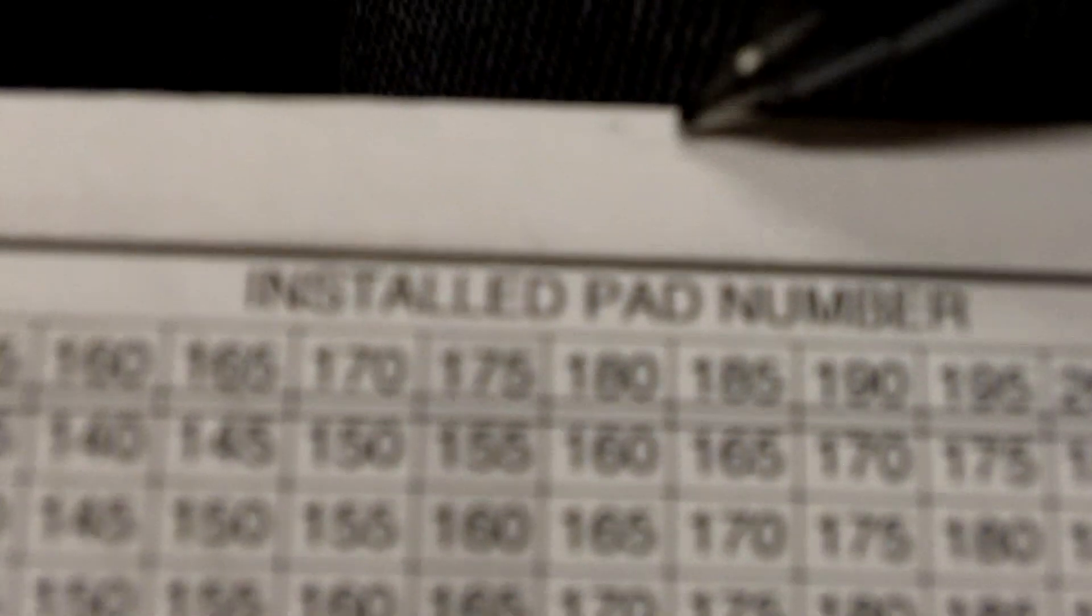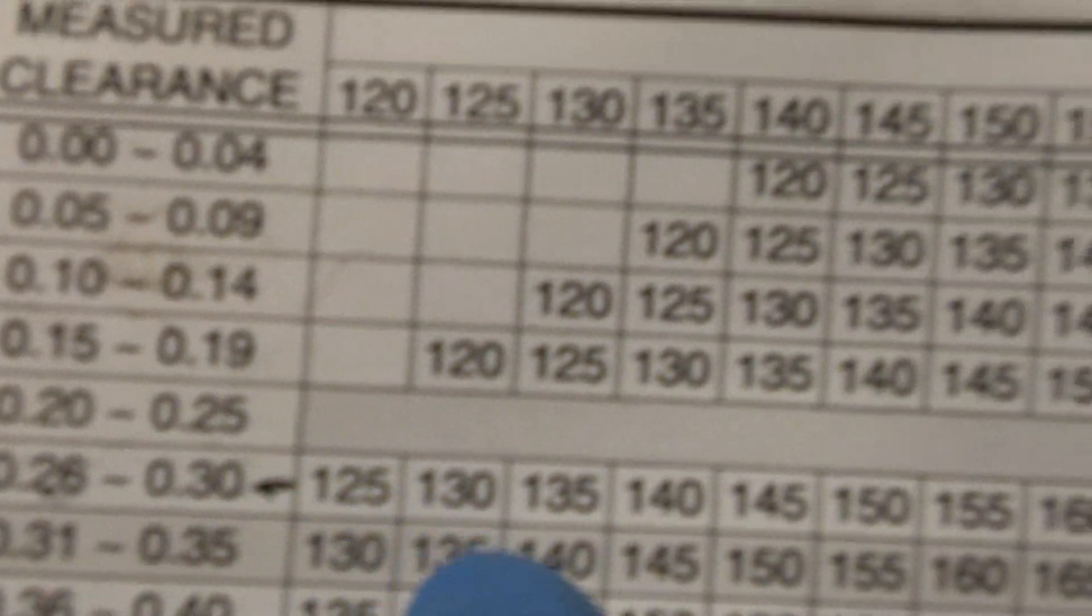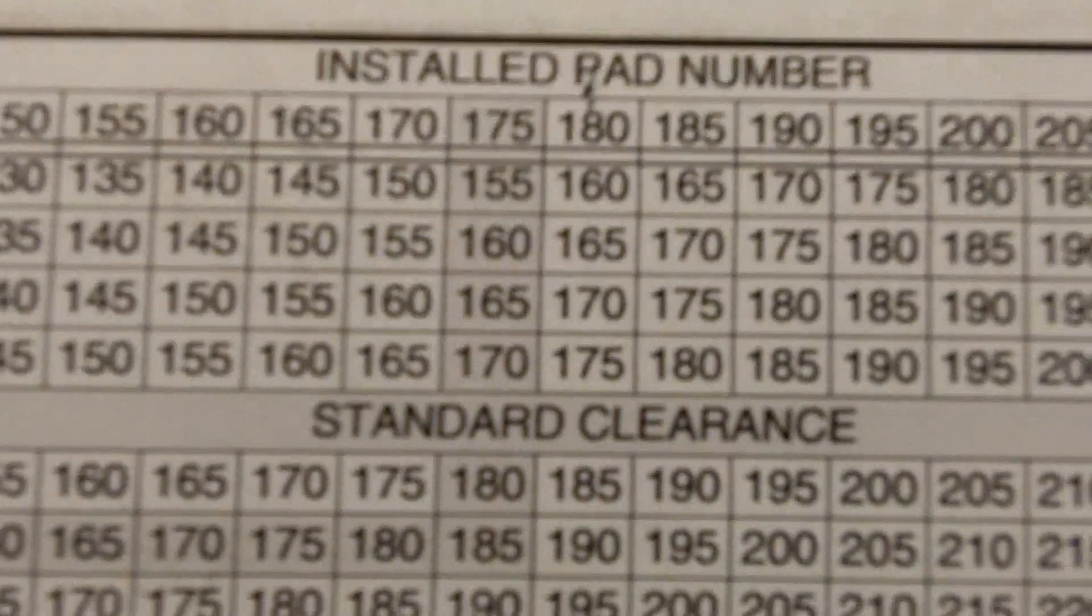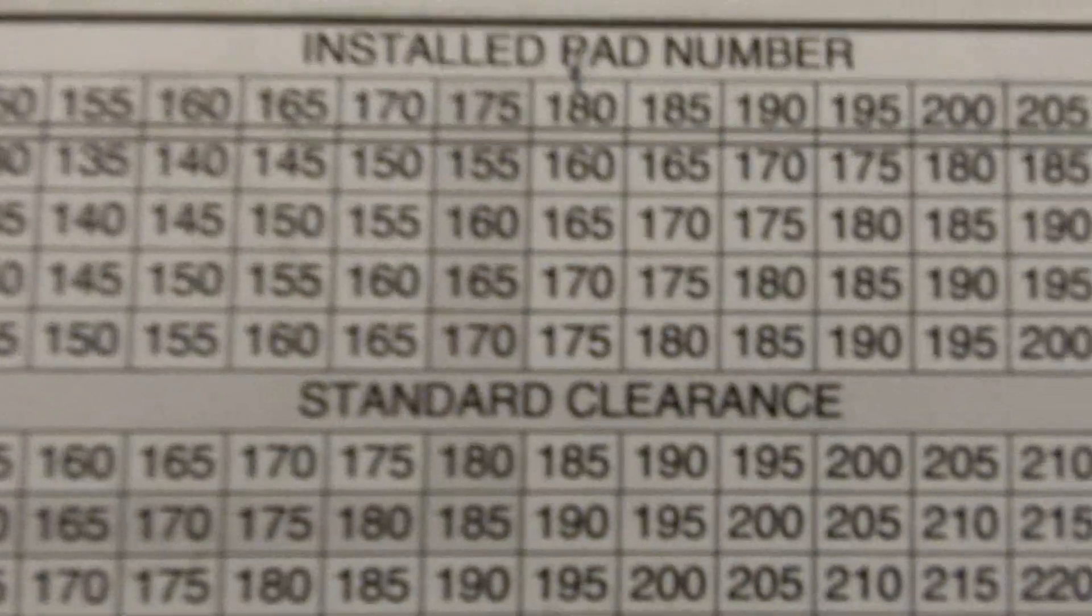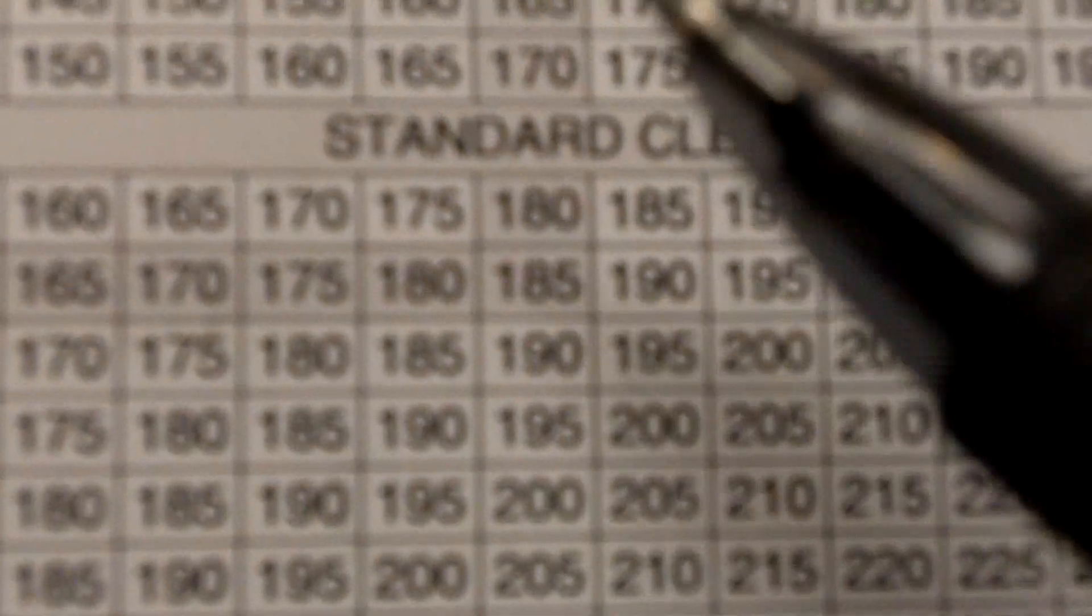So basically we want this one here. And we know that the installed pad number is 180. So it's that one here. So what we need to do now is we need to come from right across here to the 180. There's the 180 pad .26, .30. So it says we need to put in a .185 pad number. Now some companies sell their pads with numbers like this. Some companies sell pad numbers that would be like 1.85. It's the same thing. Just minus the point. So again, we'd have to get the 185 shim and put it in there. And that would put us back within spec.